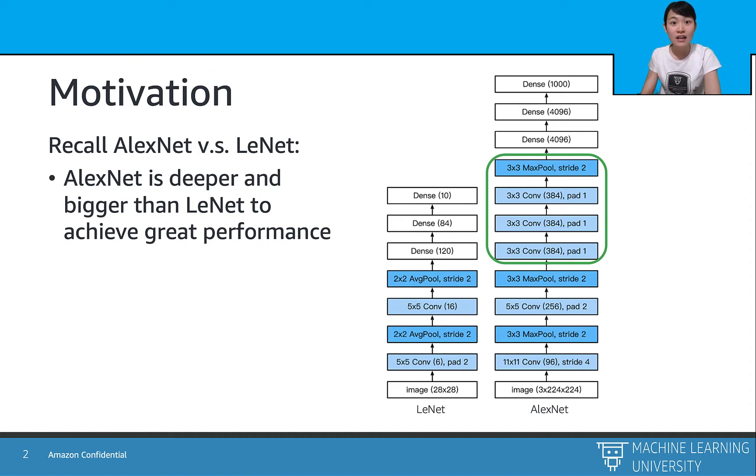Fundamentally, AlexNet improved upon LeNet by adding more layers, larger kernel size on the convolutional layers, and more neurons on the dense layers.